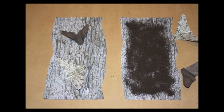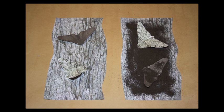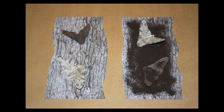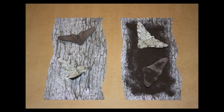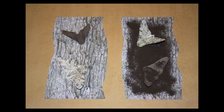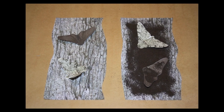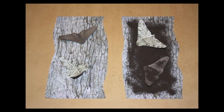The trees the moths lived on became constantly coated in black soot, so the pale moths were more vulnerable to predators. Therefore the characteristic of darker coloring became more favorable to survival within the new environment.